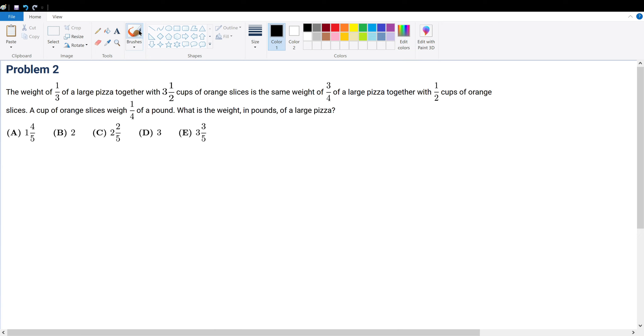Problem 2: The weight of one-third of a large pizza together with three and a half cups of orange slices is the same weight as three-fourths of a large pizza together with half cups of orange slices.